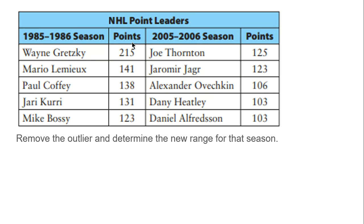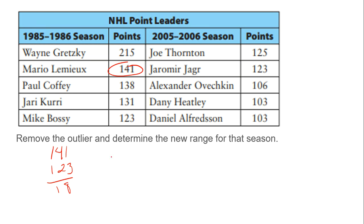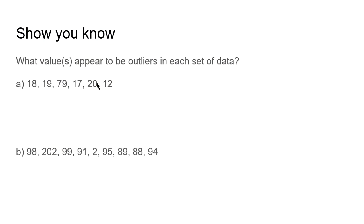Remove the outlier and determine the new range for that season. Now the highest number is 141 minus 123, so the difference is now only 18. That's way closer than the 2005–06 range of 22. Without Gretzky, the 1985–86 season is actually a tighter race. For the next question, pause it and figure out the outliers on your own. Looking at the data, 2 is way too small and 2002 is way too big — those are the outliers. The rest fall within a certain range.